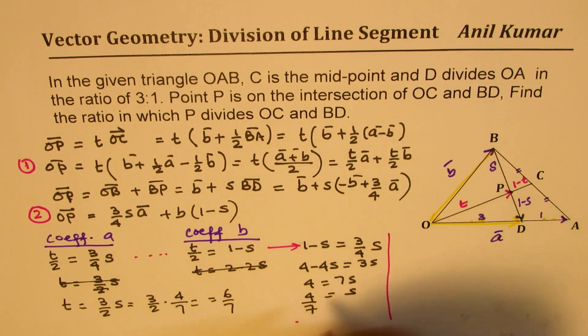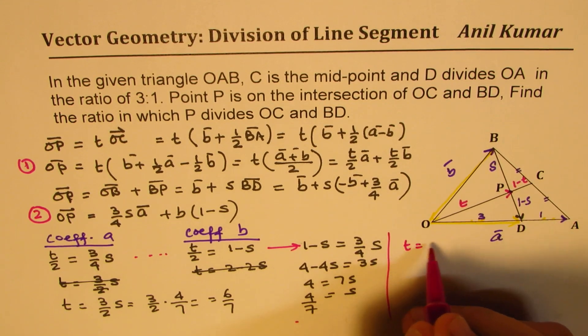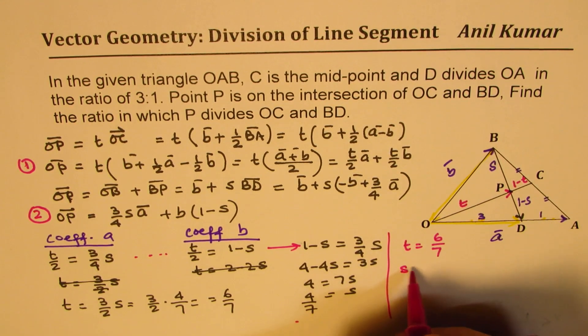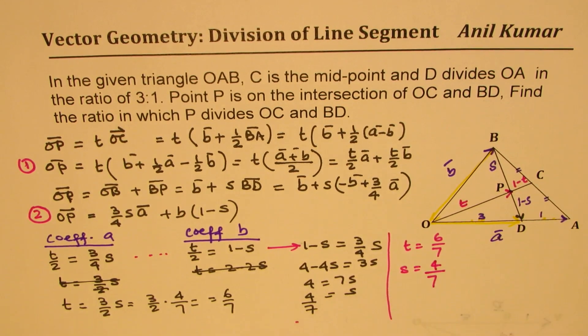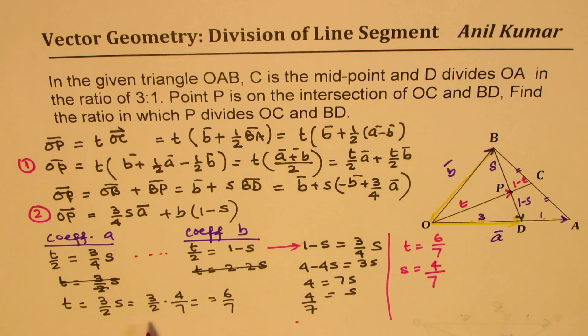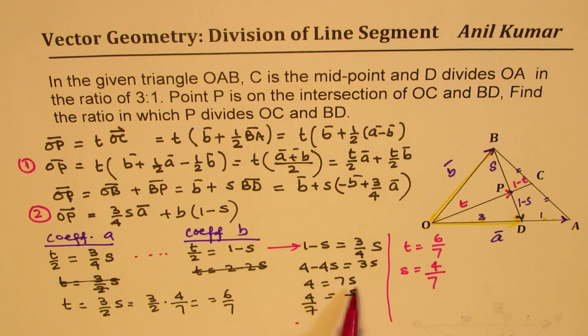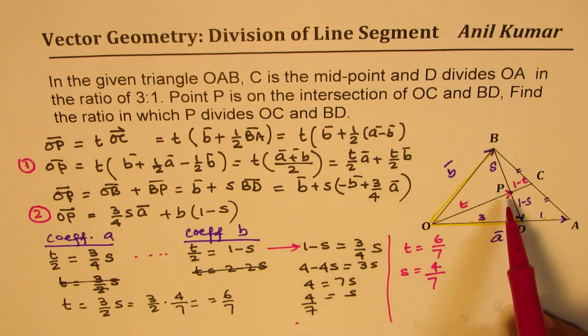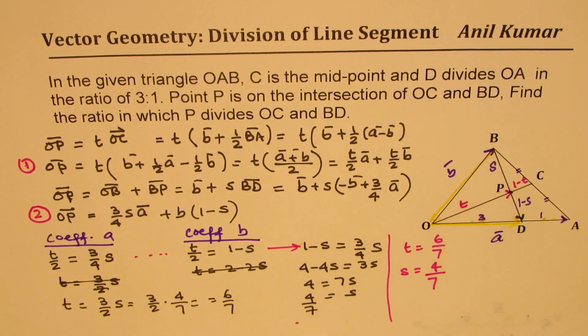So, we got both the parameters. So, you are saying T is basically equals to 6 over 7 and S is equals to 4 over 7. So, this is 2 times 6 over 7 and here we get 4 over 7. That's correct. So, that is how we get our parameter S and T.